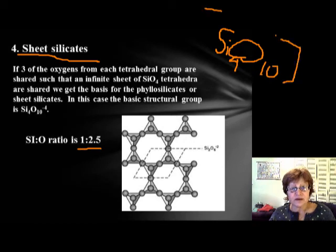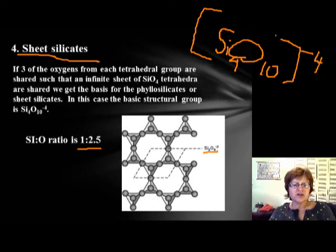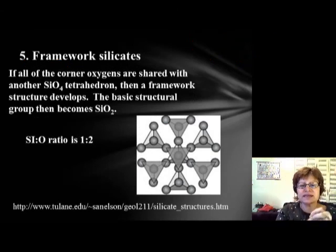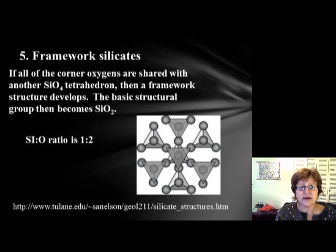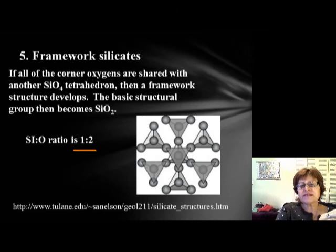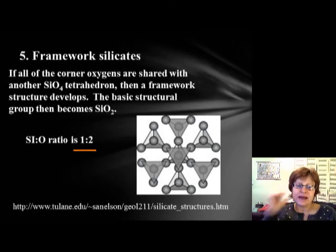The sheet silicate formula is Si₄O₁₀ with four negative charges, fulfilled by cations. The final structure is the framework silicate, where oxygen atoms are shared in every direction in a three-dimensional structure. The basic unit is SiO₂, which is essentially quartz. The Si:O ratio is 1:2 — compared to 1:4 at the start — meaning these minerals are increasingly enriched in silicon relative to oxygen.